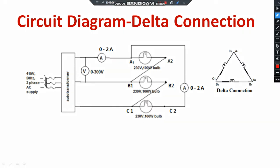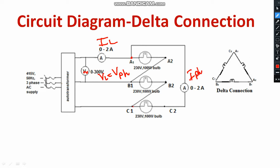Now regarding delta connection — A1A2, B1B2, C1C2 are the three coils. The ending of the first coil is connected to the beginning of the second coil, and the ending of the second coil is connected to the beginning of the third coil. There is no neutral point. This type of arrangement is known as delta connection. In case of delta connection, the voltmeter gives both line voltage and phase voltage — line voltage and phase voltage will be equal. The ammeter gives the line current, and there is a separate phase current. You will be identifying the relation between line current and phase current.